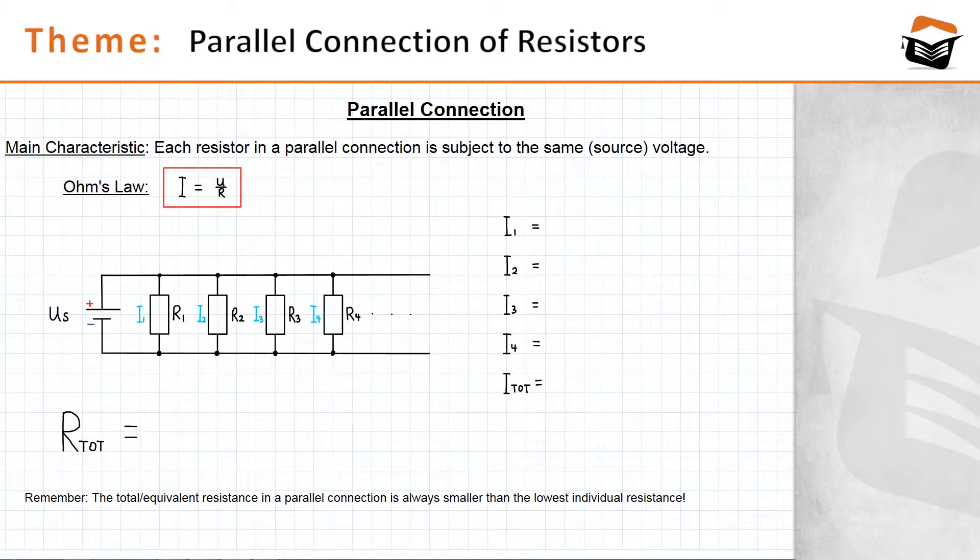To compute the current flowing through each individual resistor, you have to divide the source voltage, US, by the respective resistance. So for I1, it would be US divided by R1. The same thing is done for the other resistors.